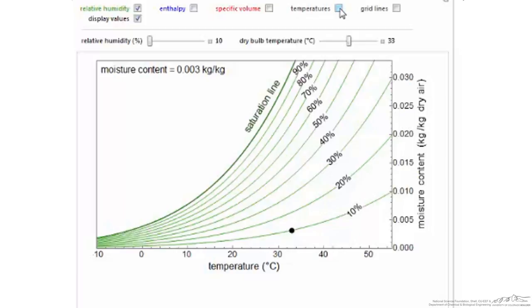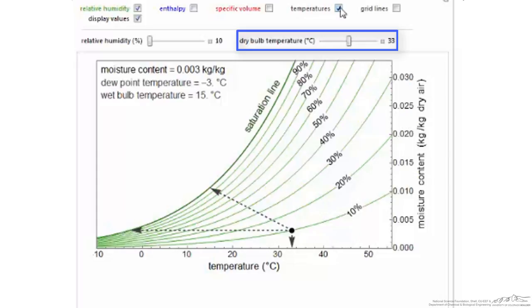There are three temperatures that can be obtained from a psychrometric chart. As noted previously, the values on the bottom axis are the dry bulb temperature. A vertical line dropped from the black dot indicates that the dry bulb temperature is 33 degrees C.